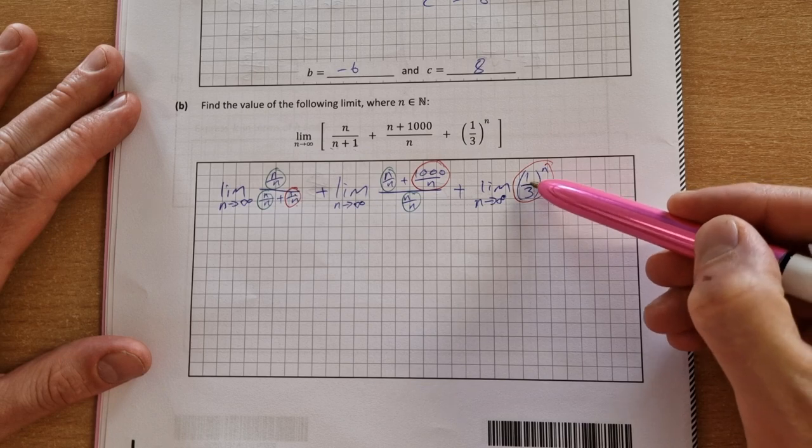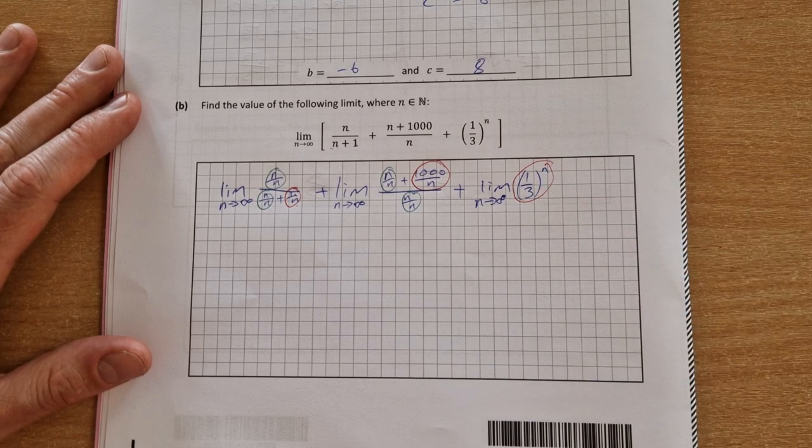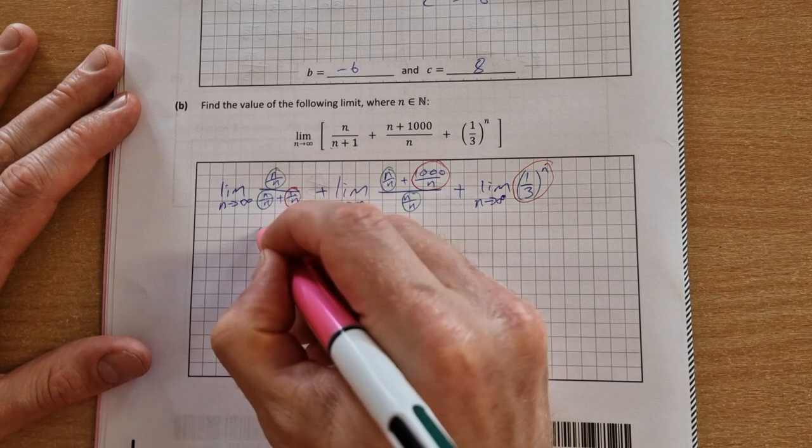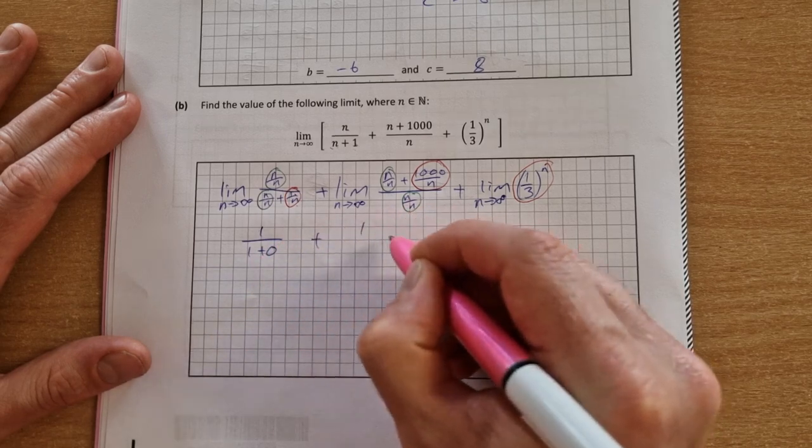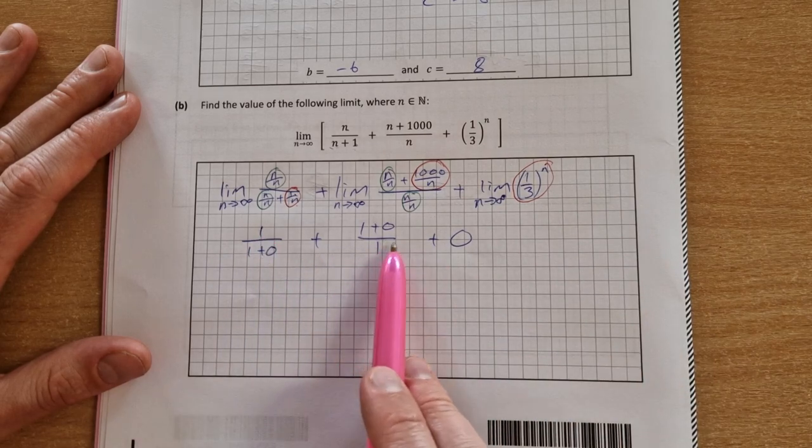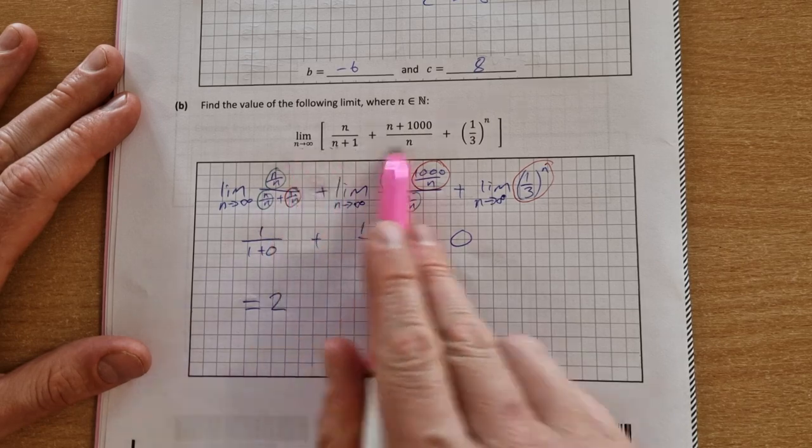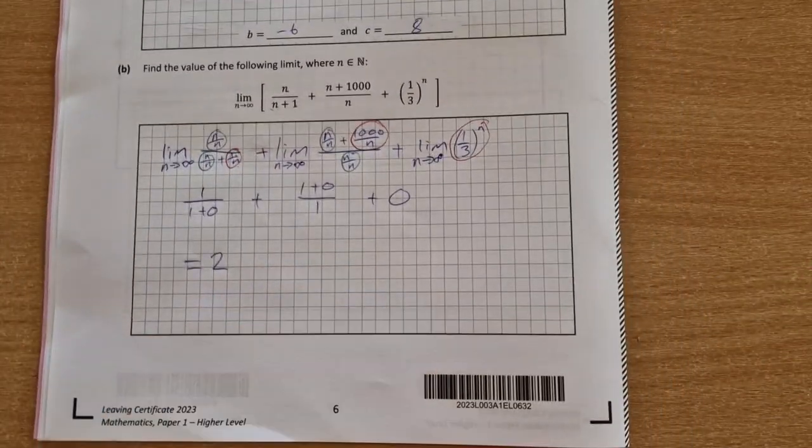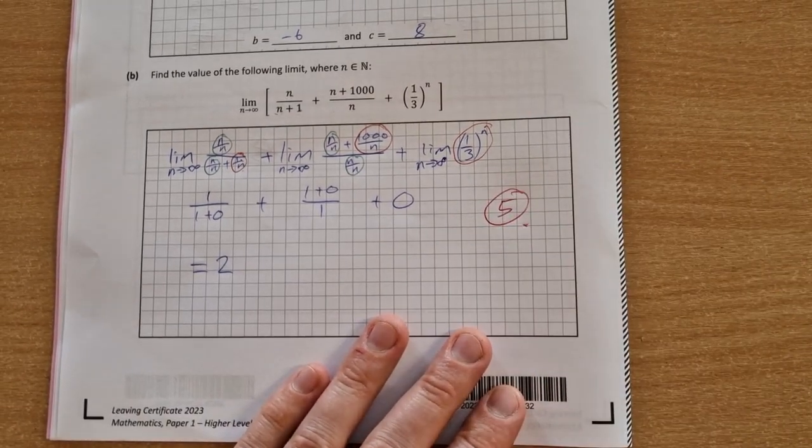As you increase any fraction like this to a higher and higher power, the fraction gets smaller and it tends towards 0. So what we get is 1 over 1 plus 0 plus 1 plus 0 over 1 plus 0. So this is 1 plus 1 plus 0. The answer is 2. The limit of that is 2. That was worth a total of 5 marks out of 30 after the adjustments to the marking scheme were made.